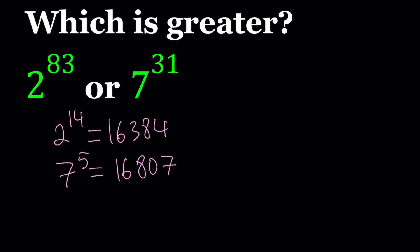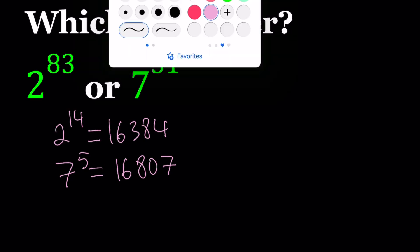Now, from here, I want to jump into the higher powers. I have 83rd and 31st. So that tells me to get closer to 7 to the power 31, I should probably consider 5 times 6 plus 1. So it makes sense if I raise both sides to the 6th power. Let's go ahead and do that.